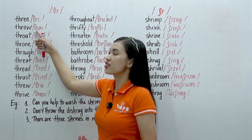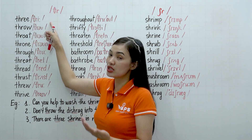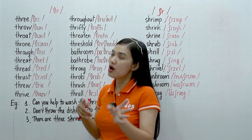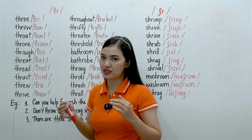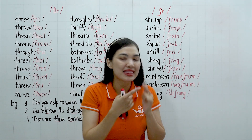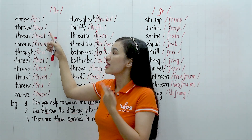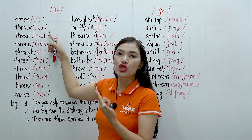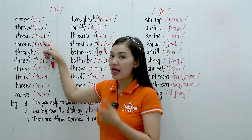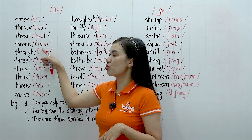This one — THR, THR, THR. You can use a mirror. And this one: through, throat, throat, thrown, thrown, this one — through.